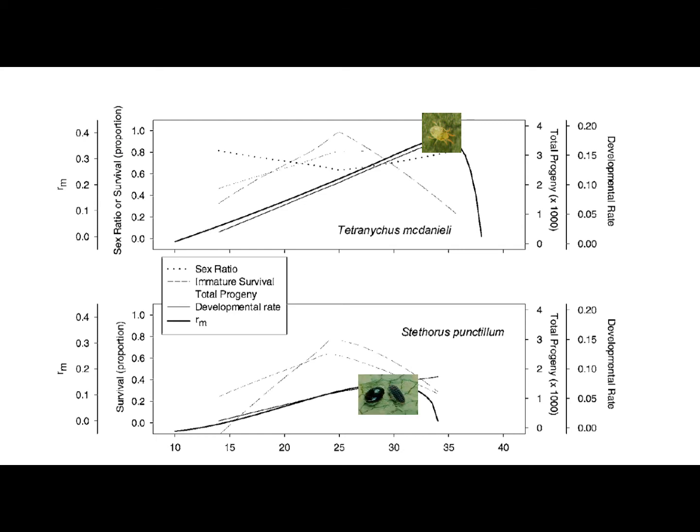Meanwhile, Stethorus punctilum has a peak of about 1600 progeny per generation at 29 degrees celsius and sharply declines at higher temperatures as well. There are a few interpretations that can be made from this data. Because Stethorus punctilum reaches peak reproductive rate at several degrees less than its prey and cannot tolerate the higher temperatures, there is a range at which the prey can reproduce completely uncontested by this agent.